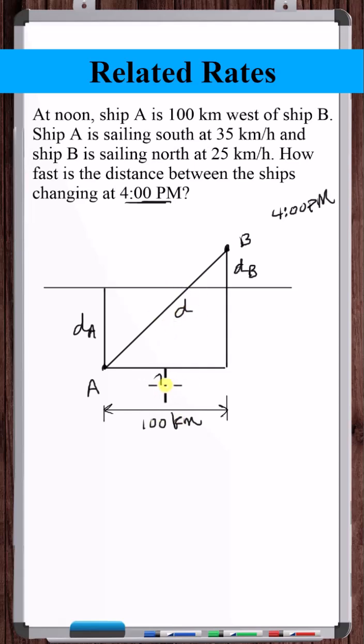Pythagorean theorem. Let's say this is X and this entire distance is Y, and this is the hypotenuse. So this big triangle here is the right triangle. So this first side is D-B plus D-A squared plus 100 squared is equal to D squared.